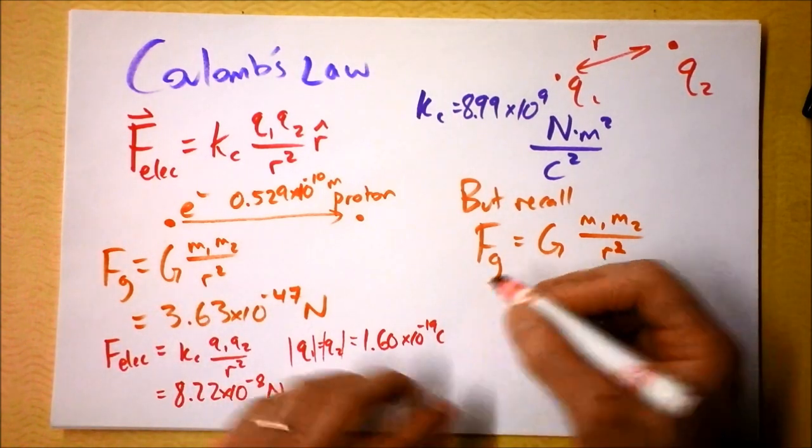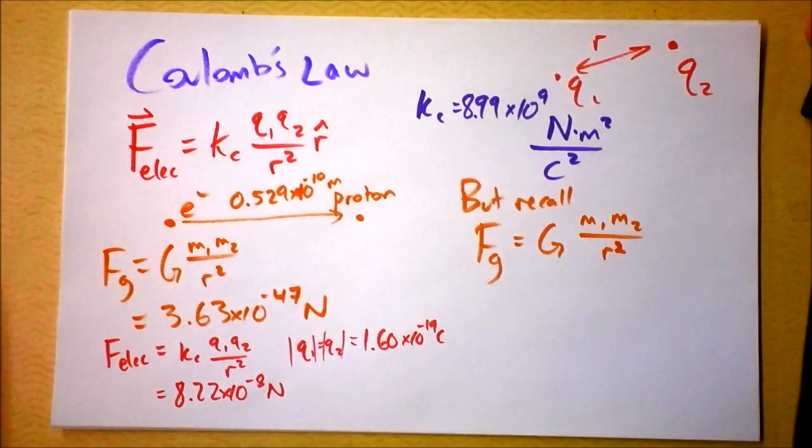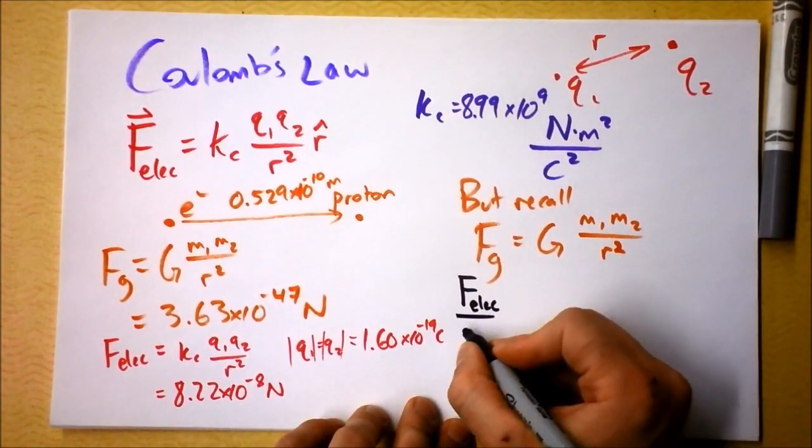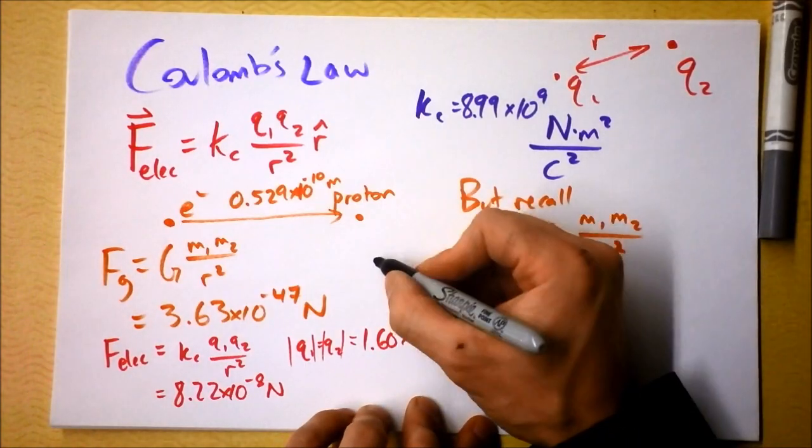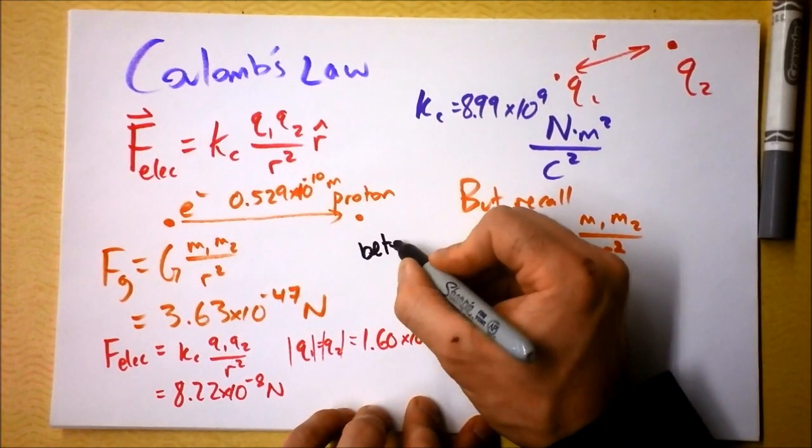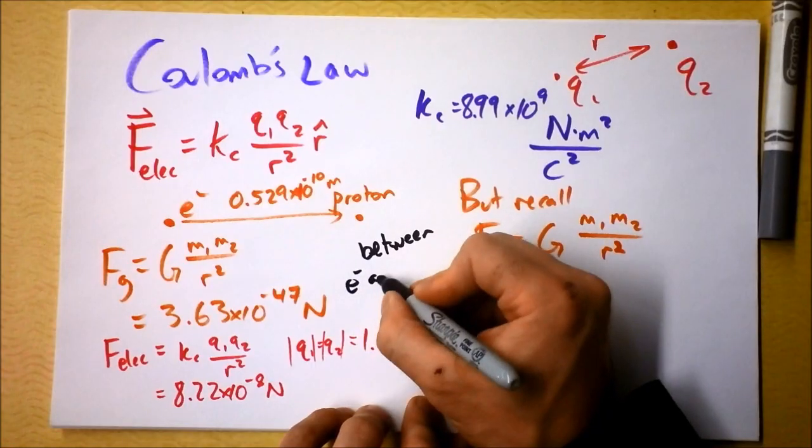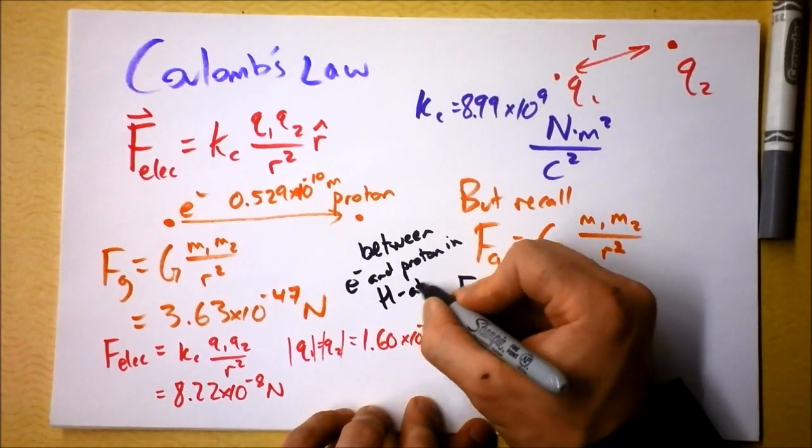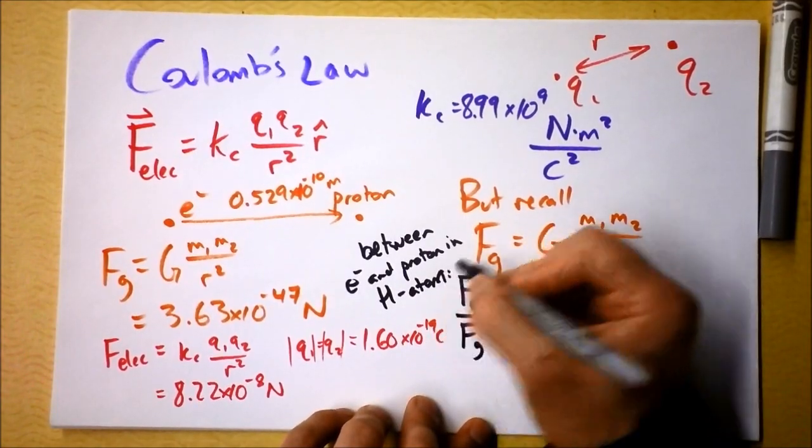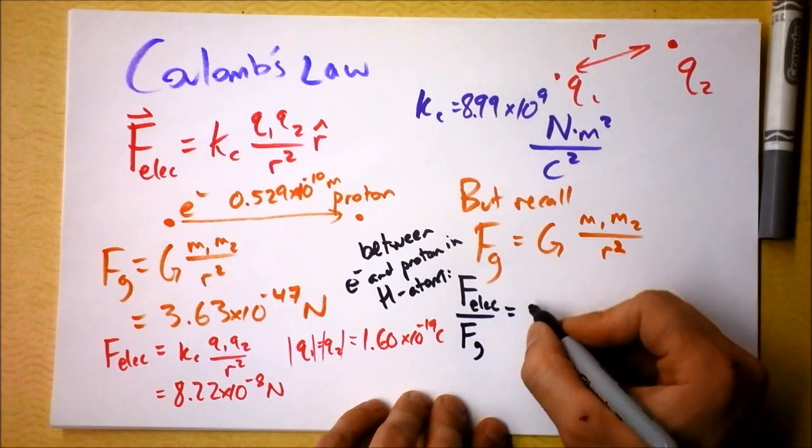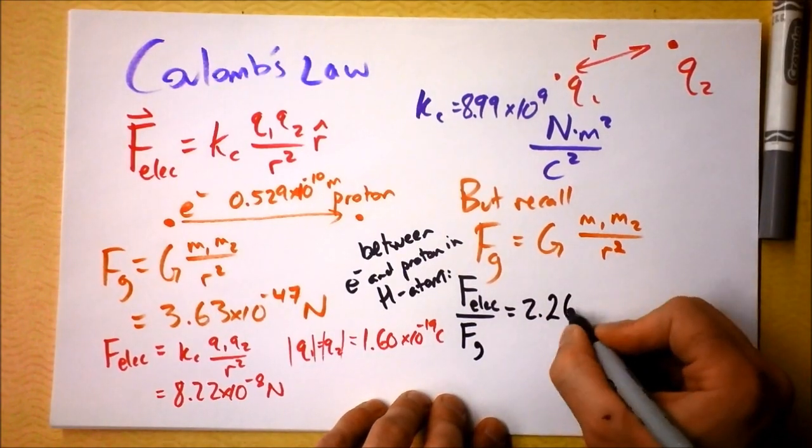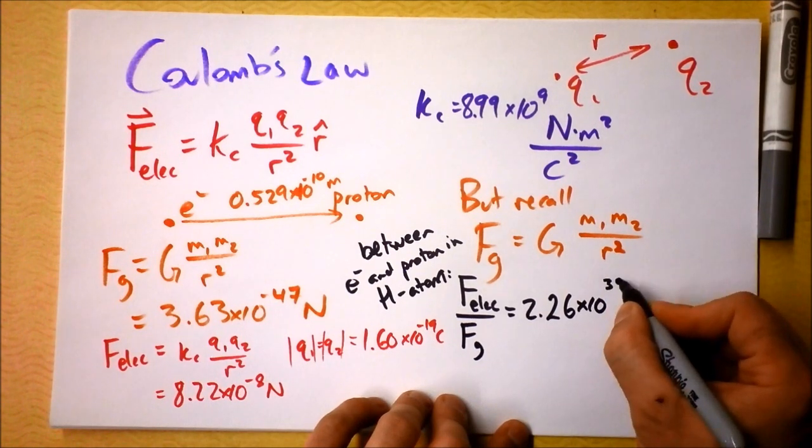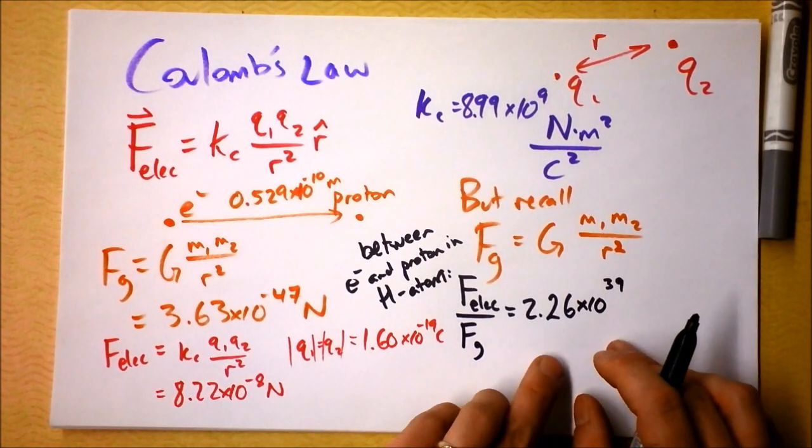In fact, if I divide them, let's do that in black because this is sort of a bold thing. If I divide the force electric by the force gravitational between electron and proton in hydrogen atom, then I'm going to get this ratio. The ratio turns out to be 2.26 times 10 to the, get ready, 39th. And it's unitless because it's the ratio of those two forces.